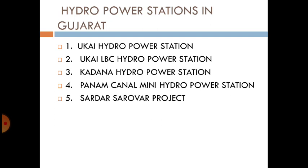Next, the UKI Left Bank Canal (LBC) Hydro Power Station. This power station is located in Surat district, on the Tapi river. It is built alongside the canal near the UKI dam. It has 2 units of 2.5 MW each, with a total installed capacity of 5 MW. The units were commissioned in December 1987 and February 1988.